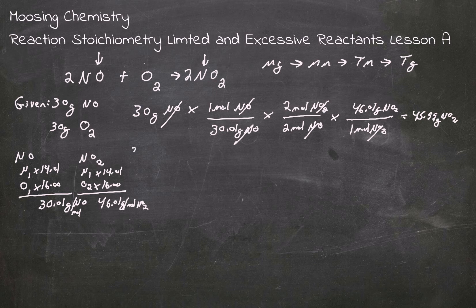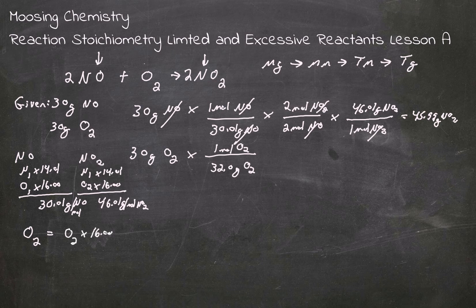And I would do the oxygen. So we go 30 grams of O2 times 1 mole of O2 over 32.0 grams of O2. Where did that 32 come from? O2 is 2 times 16.00, which is 32 grams per mole of O2.